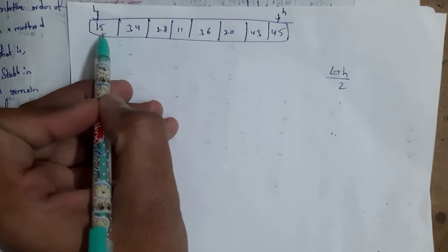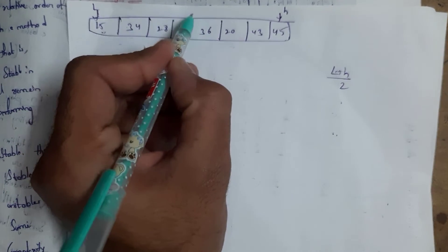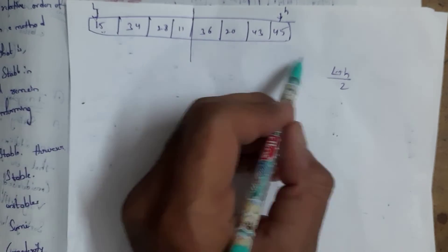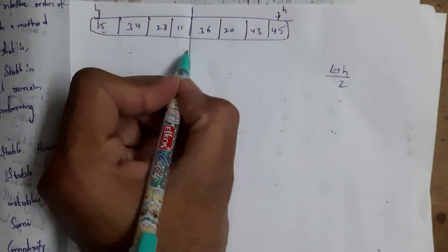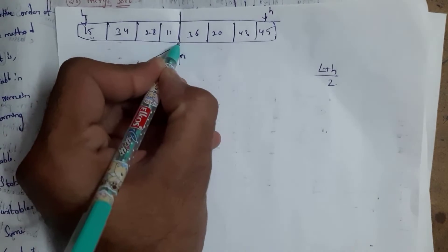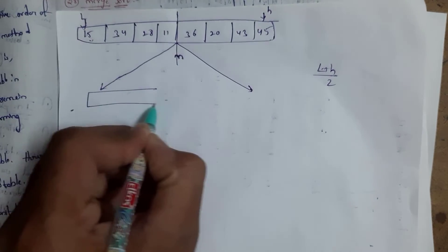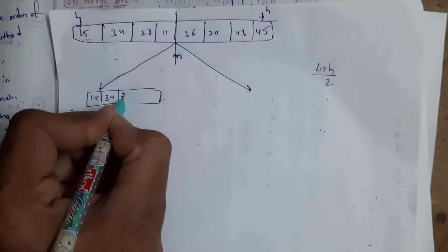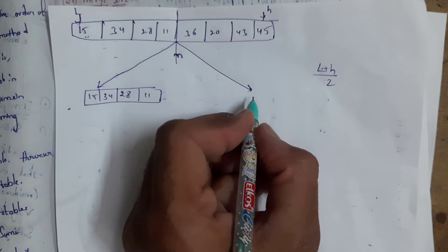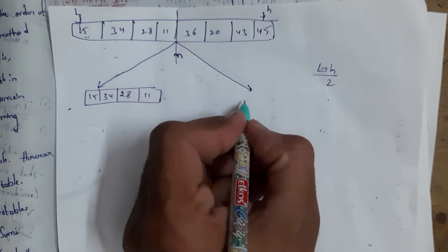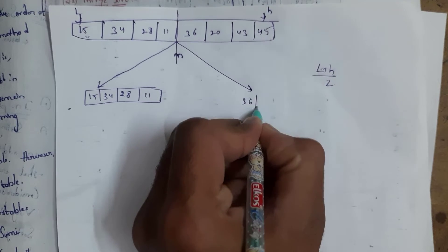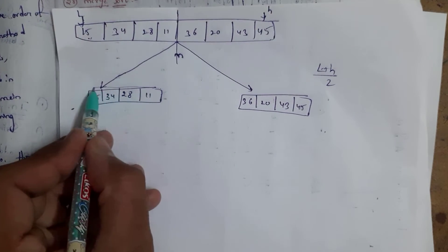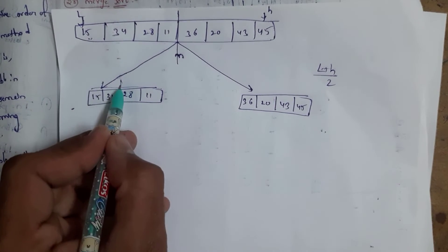Since there are 8 elements, we divide this into two equal halves — four elements on one side and four elements on another side. The first half contains 15, 34, 28, and 11, and the second half contains 36, 20, 43, and 45.